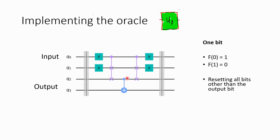A beautiful trick for that is: after we get the result in q2, we use that and transfer the information to q3 using a controlled-X or CX gate. Now we have the answer at q3 and all three qubits get reset to their initial value.